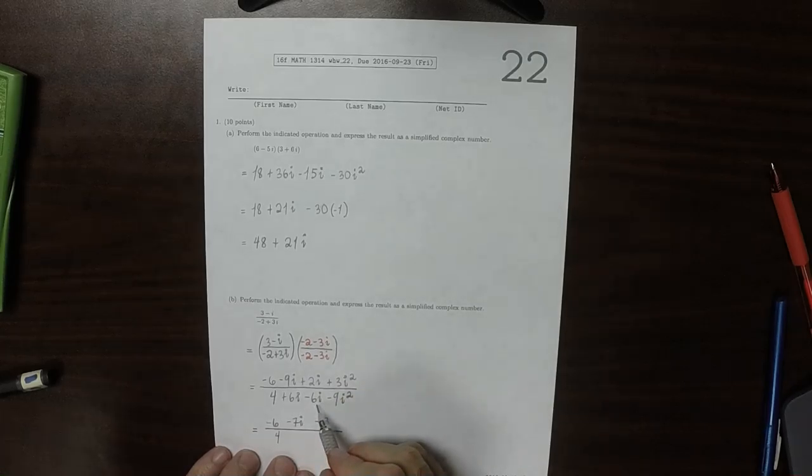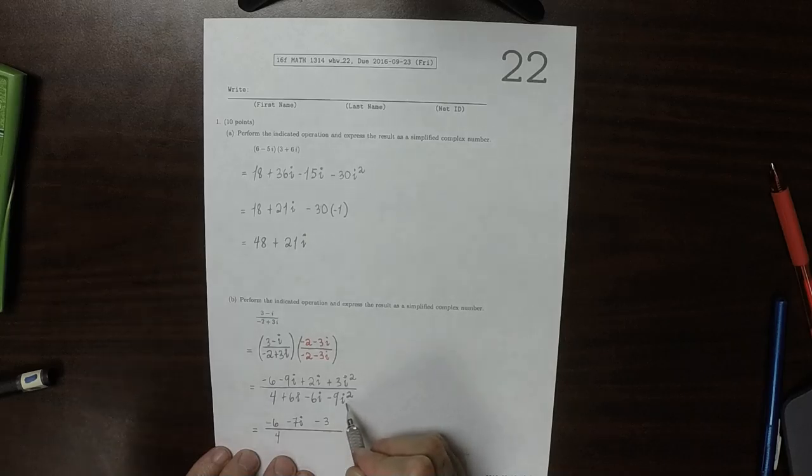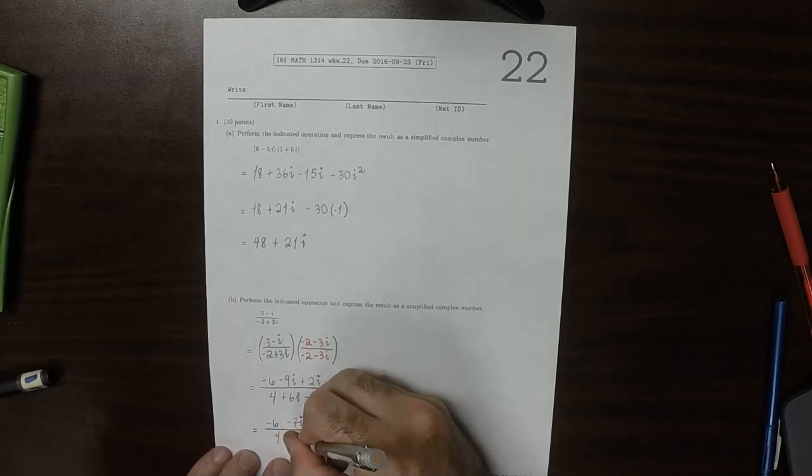In the denominator, negative 6i plus 6i cancel, and then minus 9i squared, but i squared is negative 1, so that's adding 9, giving us plus 9.